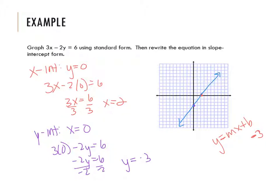And if I just count my rise and my run, it looks like I go up 3 and over 2. 3 halves x minus 3. Either way you get there, that works.